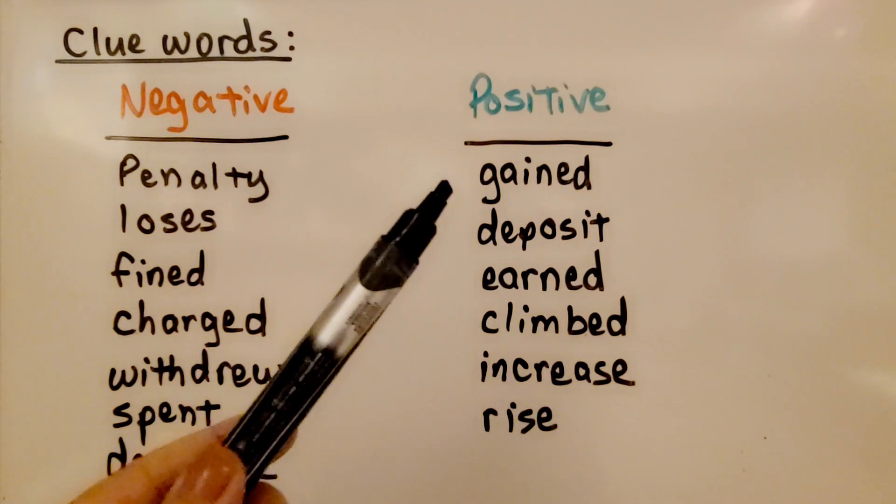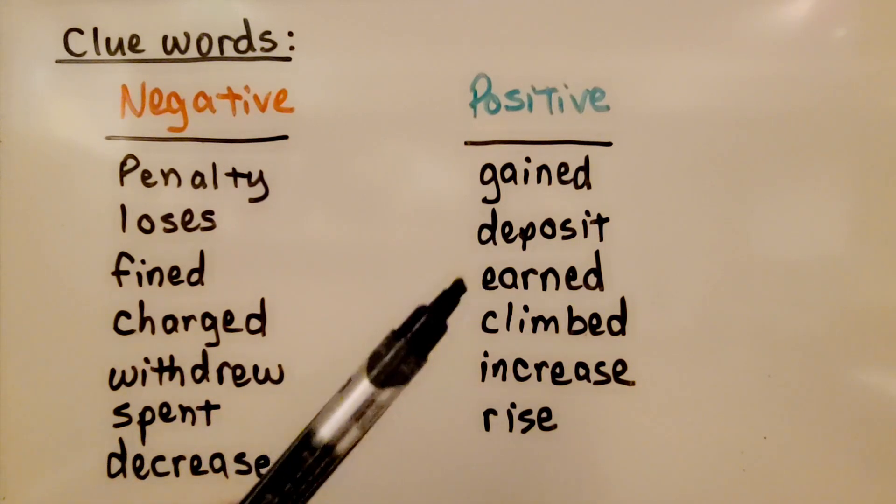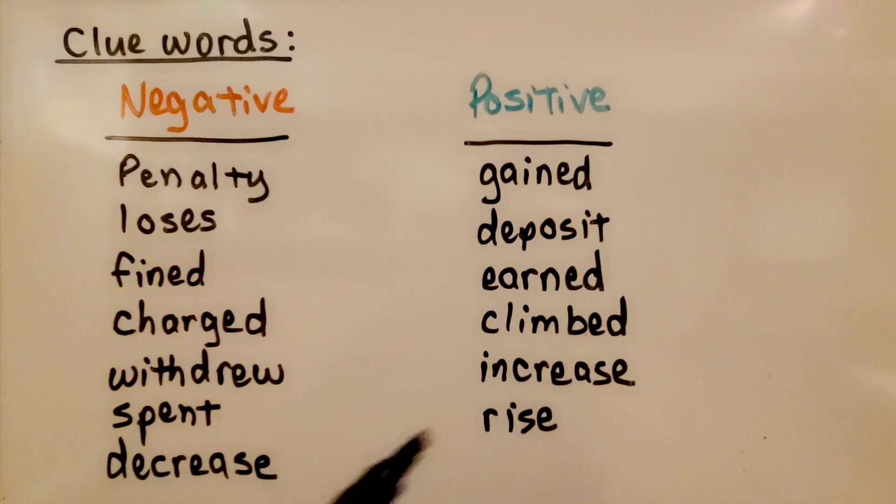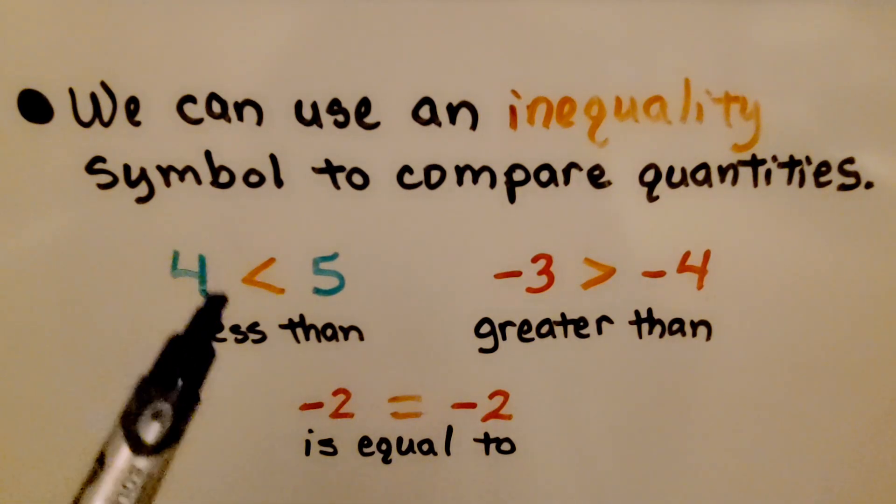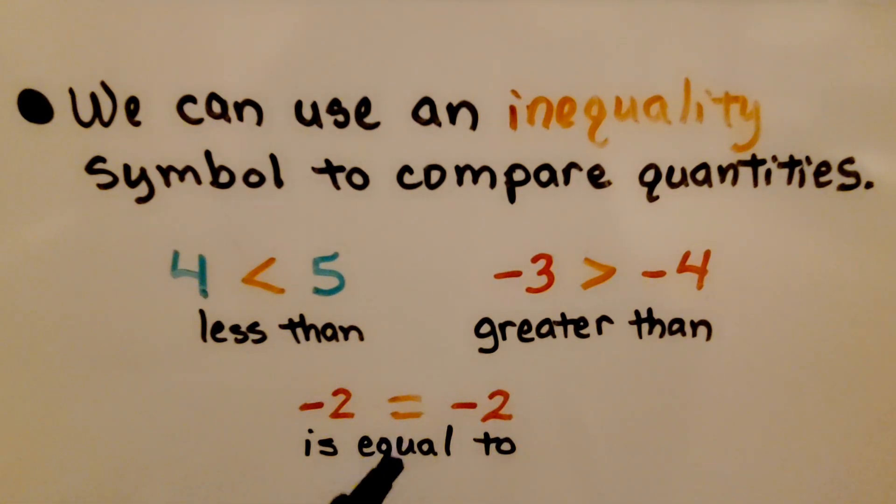And the positive ones can be gained, deposit, earned, climbed, increase, or rise. We can use an inequality symbol to compare quantities. We can use less than, greater than, is equal to to compare quantities for our word problem.